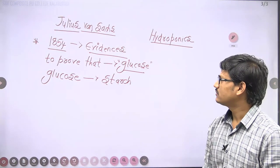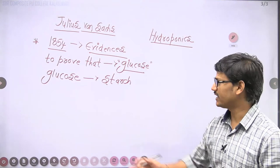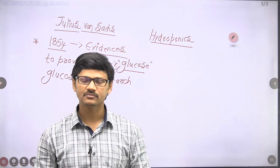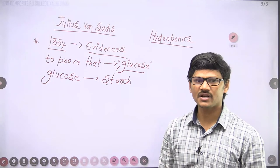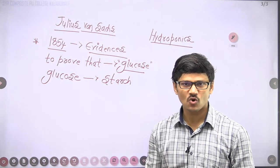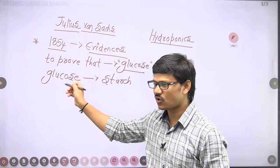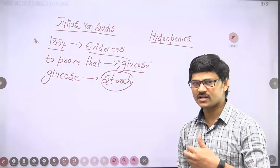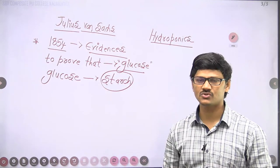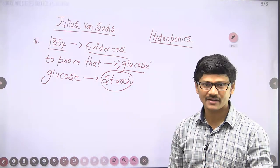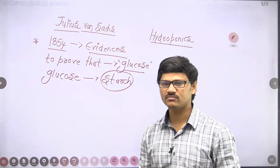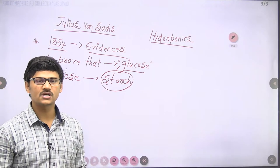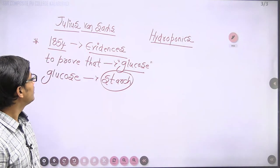Von Sachs explained why plants cannot store glucose directly: glucose is reactive and soluble, so it cannot be stored in that form. Therefore, the reactive and soluble glucose is converted into an inactive, insoluble form called starch. Even though sucrose is non-reactive, it is still soluble, so starch is the preferred storage form since it is both non-reactive and insoluble.